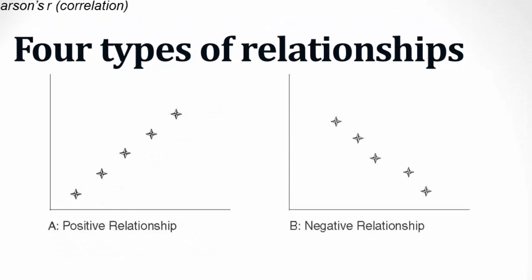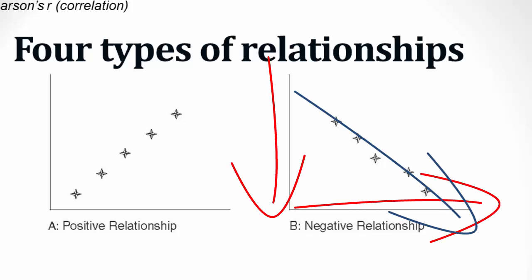A negative relationship is the opposite. The more hours spent studying for an exam, the worse the score. Or, as a person's age increases, their agility level decreases.